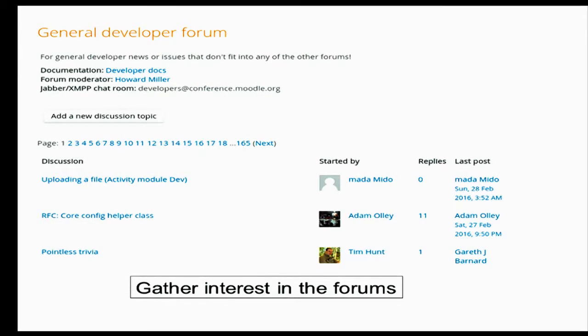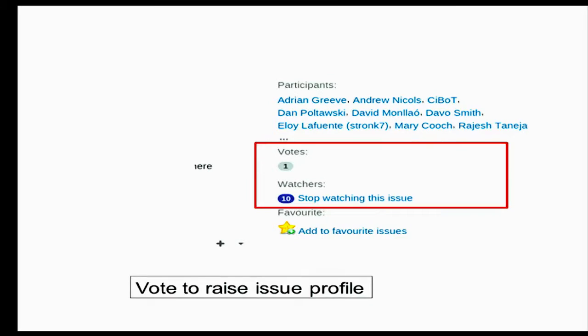The next thing to do is to try and see if you can get a little bit of interest in the ticket. So you can post in the forums, and sometimes bigger features have something added to the Moodle Docs, which describe the feature in a bit more detail. And then once people are interested in the issue, they can go on it and vote for the issue if they think it's worth looking at.